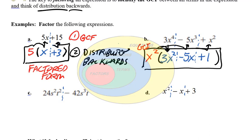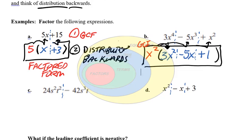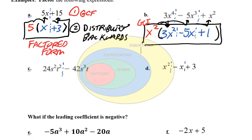You could always check it by just distributing back. The key is to recognize those greatest common factors in the terms and then distribute backwards.